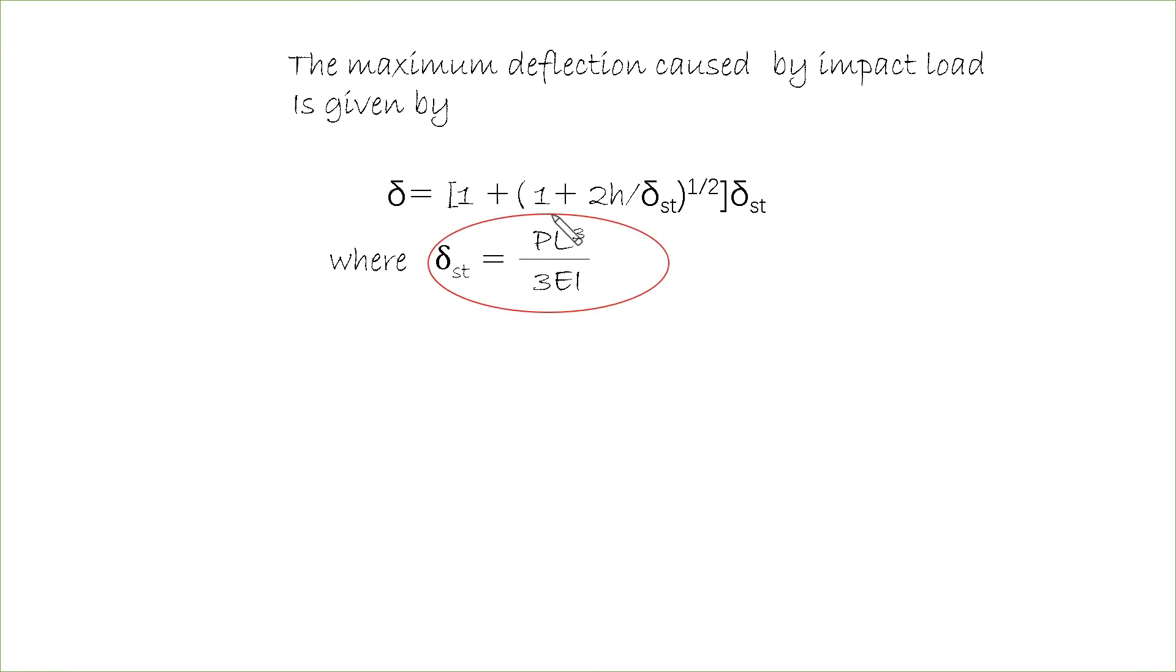The maximum deflection caused by the impact load is given by the formula here, delta. This static deflection here is the deflection of a cantilever beam due to concentrated load P applied at the free end of the beam. So this is a cantilever beam and a concentrated force P here, and this is the free end. So the deflection here is equal to this one.